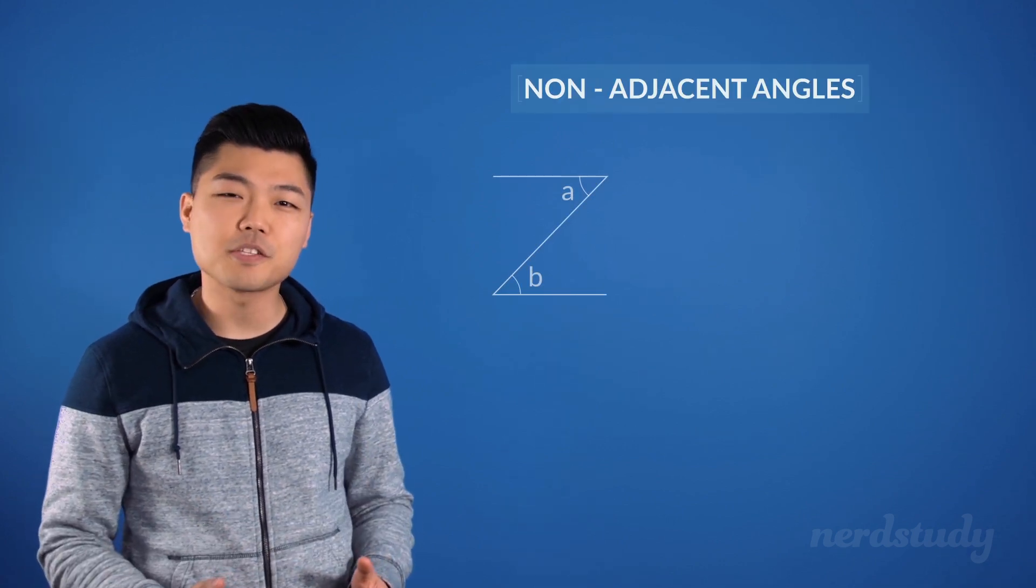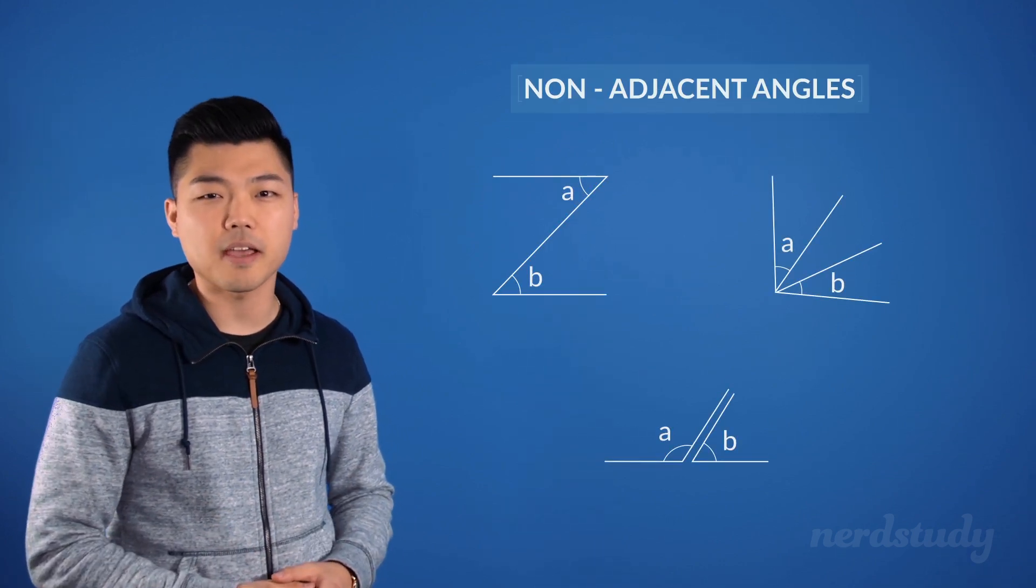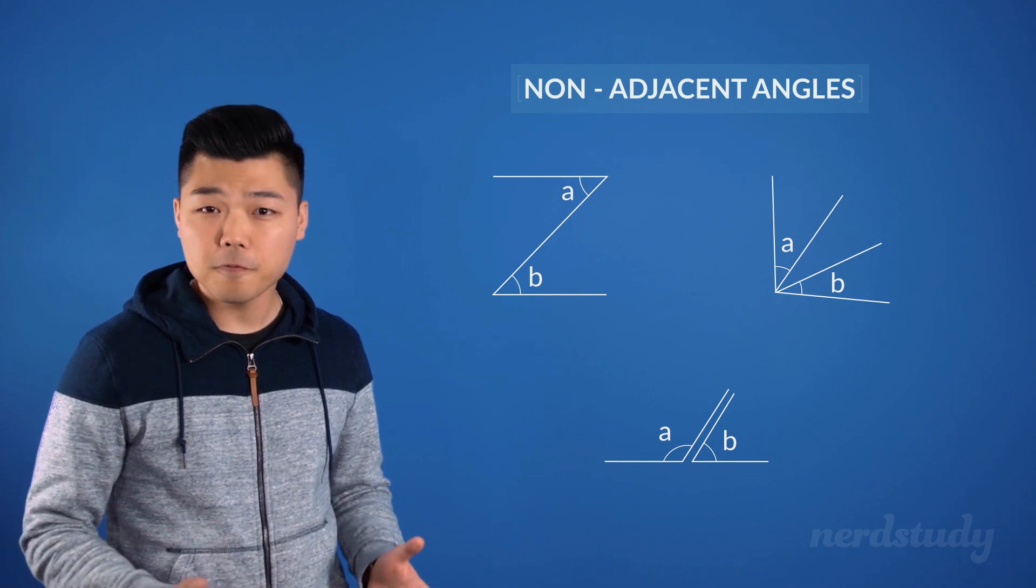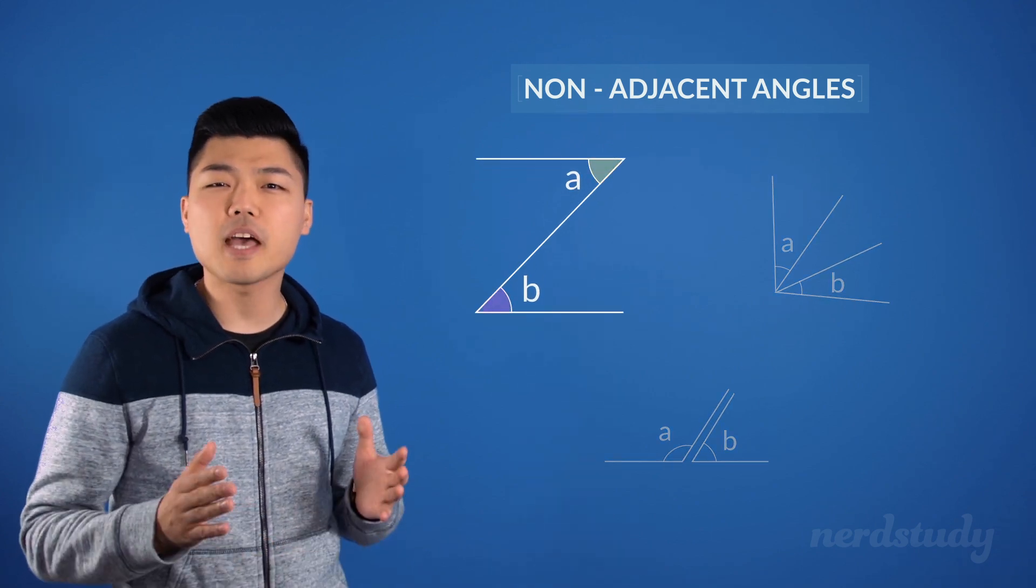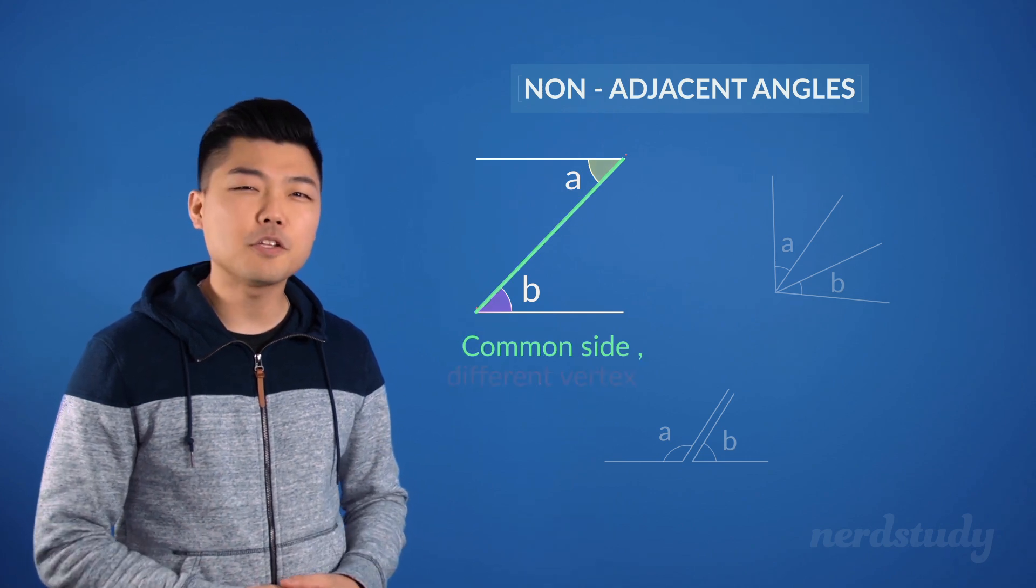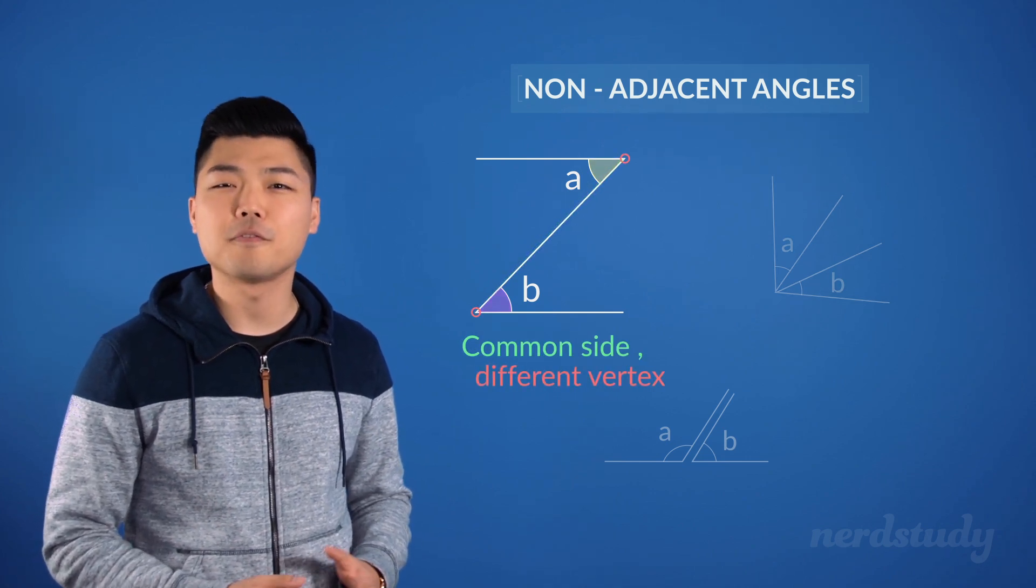Now, the following are considered non-adjacent angles. So for this first example, although these angles share a common side, they do not share a common vertex.